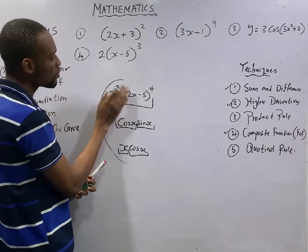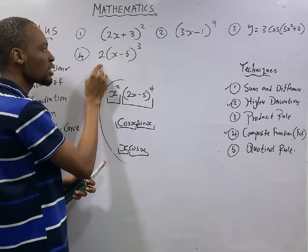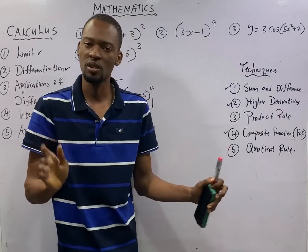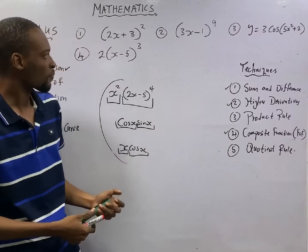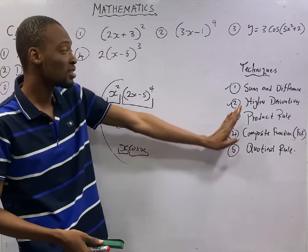Now, if you compare this with this, here is the same thing as here, but these two is a constant. Once the value outside the bracket is a constant, just leave it like that. Don't take it as a product rule. I am trying to compare composite function and product rule.